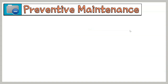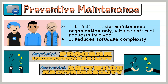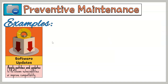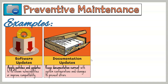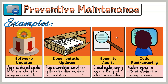Preventive maintenance is limited to the maintenance organization only, with no external requests involved. It also tends to reduce software complexity, thereby improving program understandability and increasing software maintainability. Examples include software updates — applying updates to fix known vulnerabilities, preventing security breaches, and ensuring compatibility with other updated systems. Documentation updates — keeping documentation current with system configurations and changes to prevent misconfigurations during enhancements. Security audits — conducting regular security audits to identify and mitigate potential vulnerabilities before exploits occur. And code restructuring — regularly improving the structure of existing code without changing its external behavior, to make it easier to maintain and less prone to bugs.